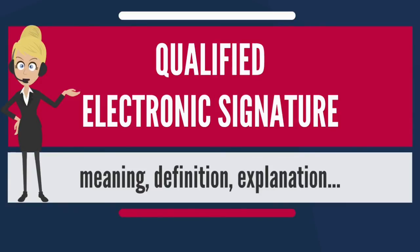All EU member states are required to recognize a qualified electronic signature as valid, as long as it has been created with a qualified certificate issued by another member state. Under eIDAS regulation Article 27, on electronic signatures in public services, member states are prohibited from requesting signatures of a higher level than a qualified electronic signature. Article 24.2 of eIDAS allows a qualified electronic signature to carry the same legal weight as a handwritten signature.